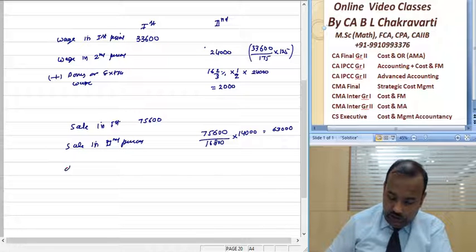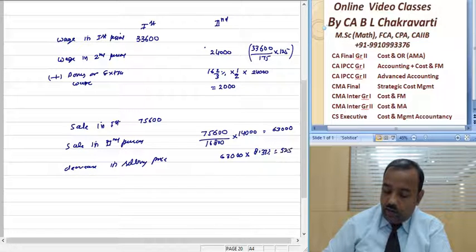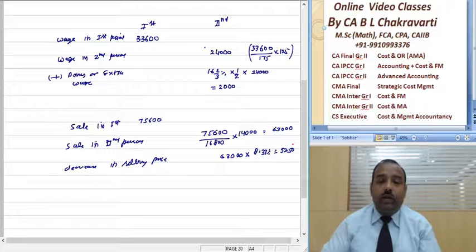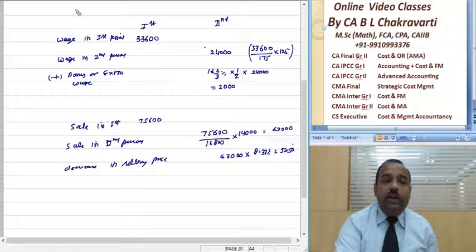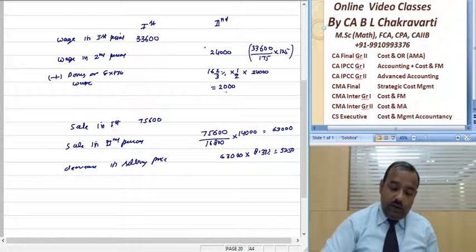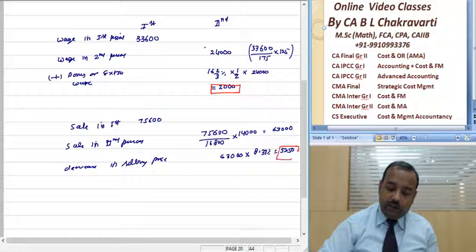Now, we've said that decrease in selling price. Selling price is 63,000 into 8.33%, equals 5,250. So, in the second year, we have this increase and this decrease.